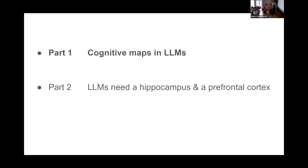So I'm going to talk about two things. First, cognitive maps in large language models — which is some ongoing and fun analysis that we ran. Then I'm going to talk a little bit more about why LLMs might need a hippocampus and a prefrontal cortex.